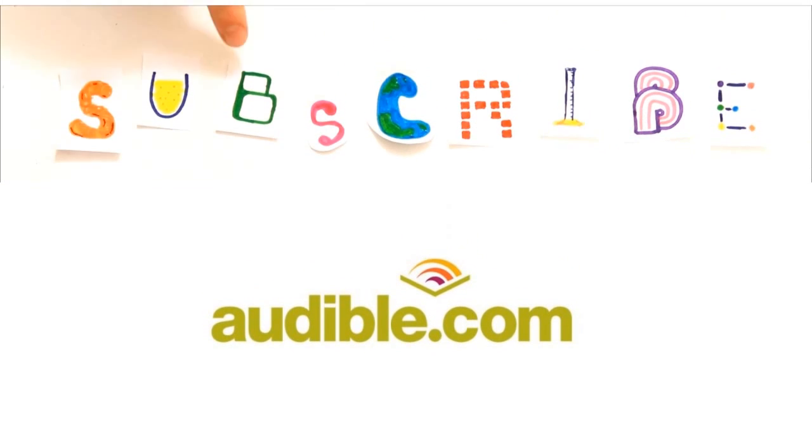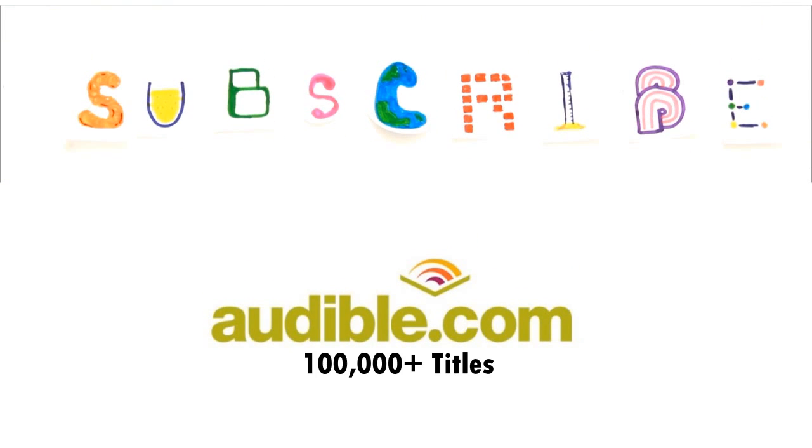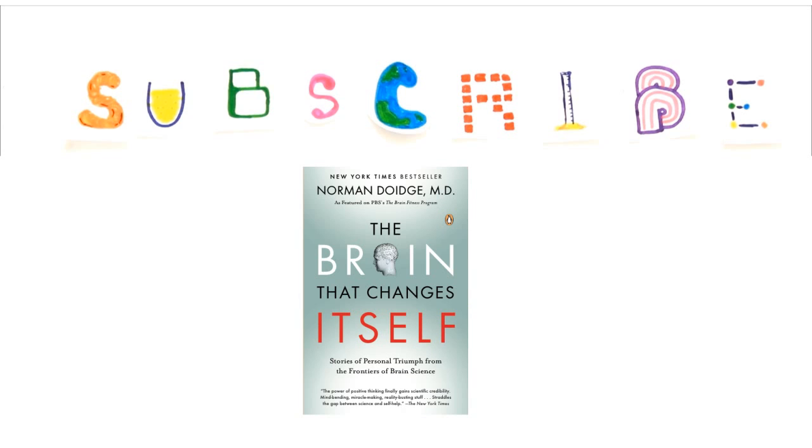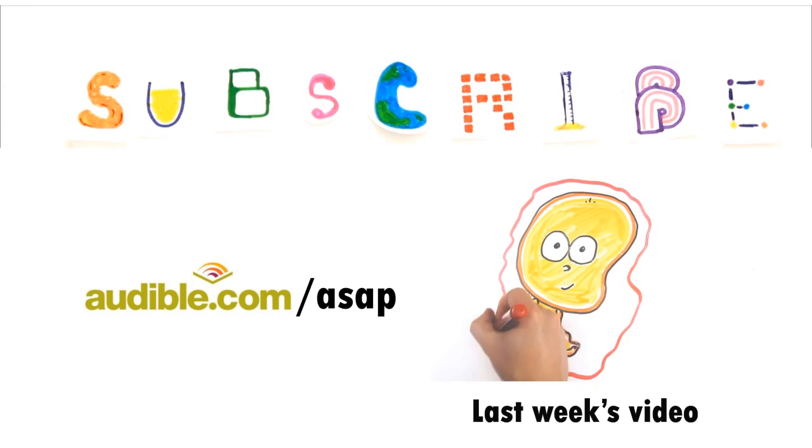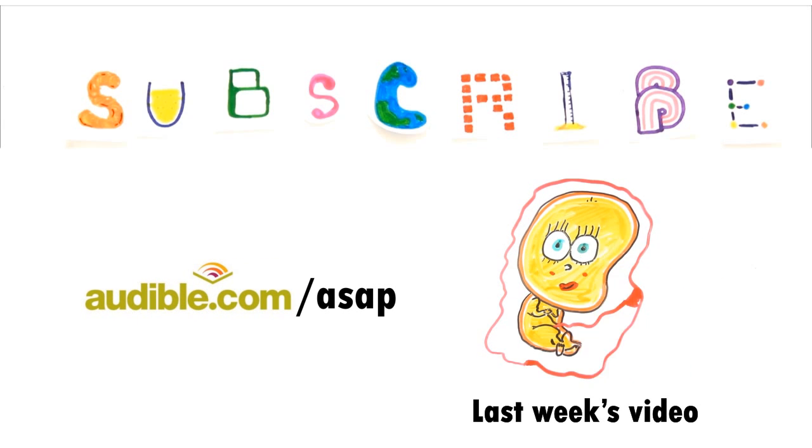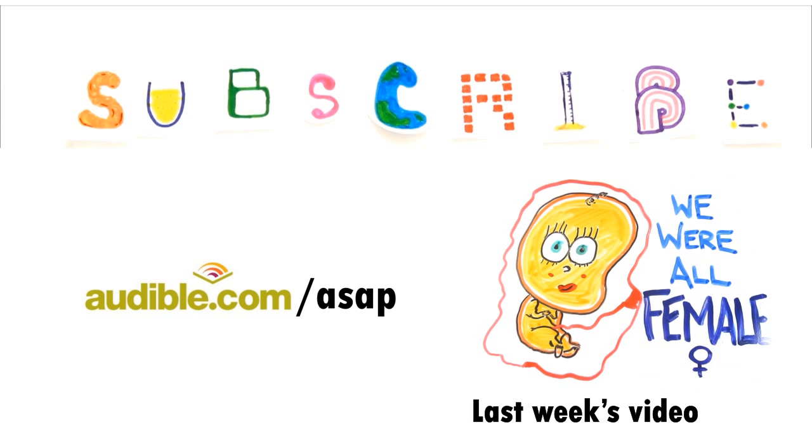This episode of ASAP Science is supported by Audible.com, the leading provider of audiobooks with over 100,000 downloadable titles across all types of literature. This episode was inspired by the book The Brain That Changes Itself by Norman Doidge. You can download this audiobook or another of your choice for free at audible.com slash ASAP. Special thanks to Audible for making these videos possible and offering you a free audiobook at audible.com slash ASAP. And subscribe for more weekly science videos!